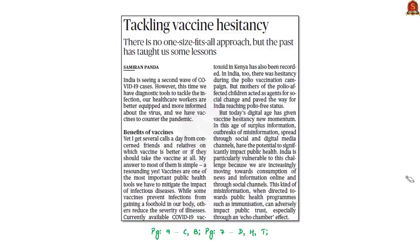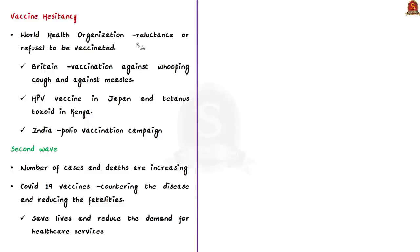Our next discussion is based on an op-ed article written by the head of epidemiology and communicable diseases at ICMR, which discusses vaccine hesitancy shown by Indian people regarding COVID-19 vaccination. According to the World Health Organization, vaccine hesitancy is a reluctance or refusal that people exhibit when it comes to vaccination. This is not a new phenomenon — it was observed in Britain during vaccination against whooping cough in the 1970s, against measles in the 1990s, and even in India during the polio vaccination campaign initially.